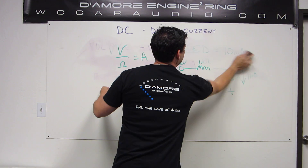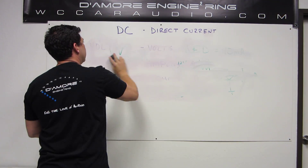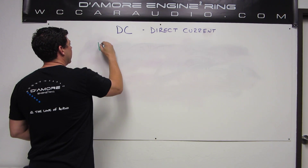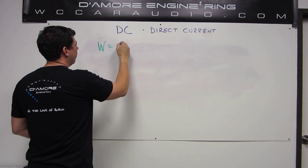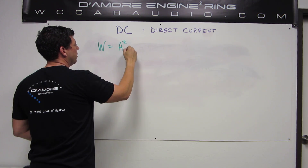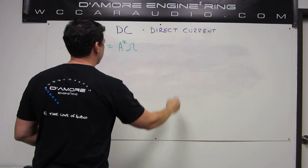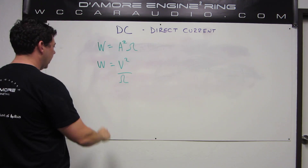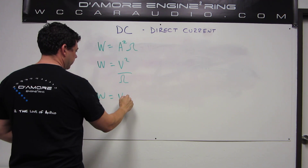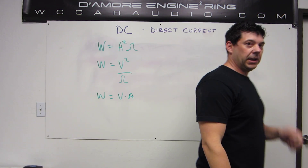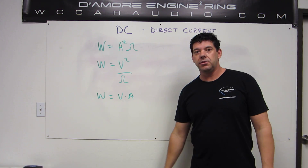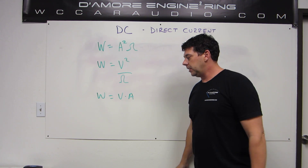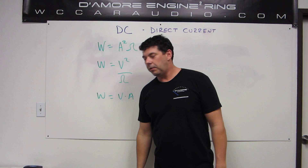Let's do another one and change the formula around. For power, there are a couple of different ways you can calculate it: current squared times resistance, voltage squared divided by resistance, or volts times current. Depending on which values you know, you choose the appropriate formula. You can rearrange these even further, but let's do a practical application.